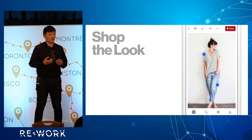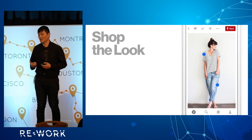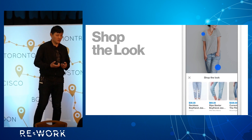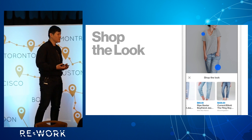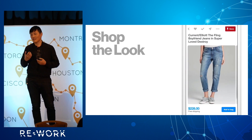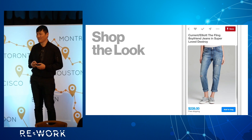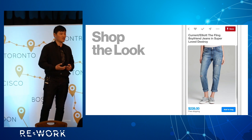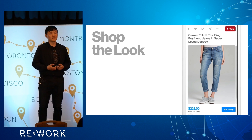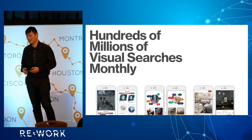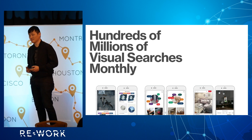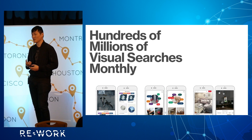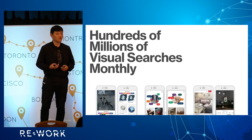Something we've been working on a lot recently is Shop the Look. The whole point is that we want to make every image on Pinterest shoppable. With computer vision we can decompose a scene and allow you to buy the look — if you have an outfit you like, you can buy the individual parts like the shirt and the pants; if you have a living room you really like, you can buy individual furniture items. Visual search is not a toy problem — we have hundreds of millions of visual searchers per month and millions of users daily, so it's really important to make visual search fast, reliable, and accurate.